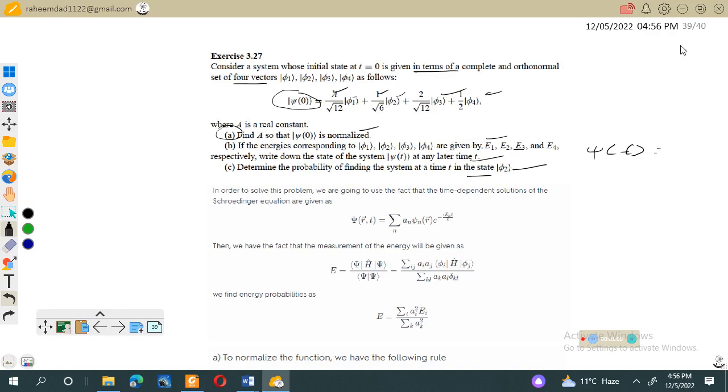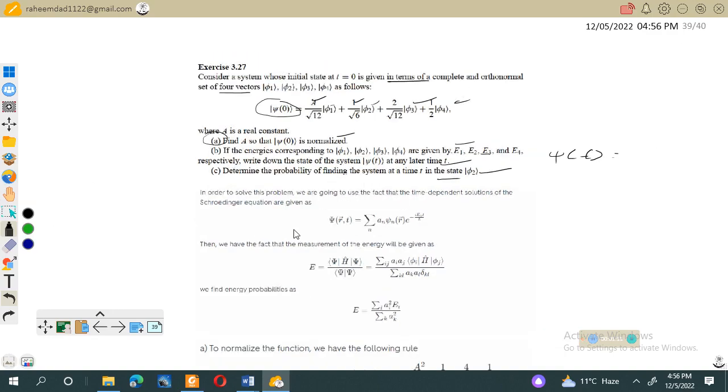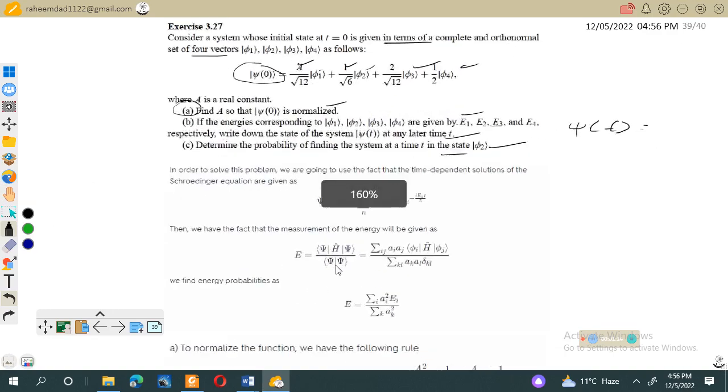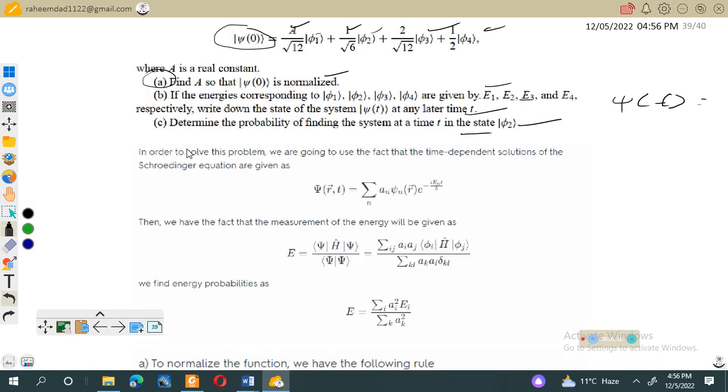In order to solve this problem, we will use the following facts. The time-dependent solution of the Schrödinger equation is given as ψ(t) = Σ aₙψₙ exp(-iEₙt/ℏ), where this is ℏ (h-bar).